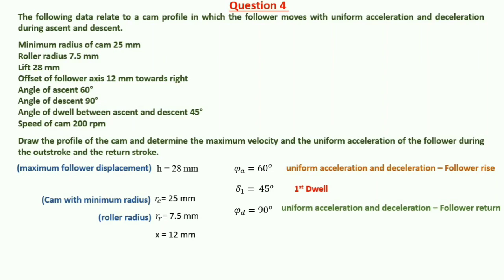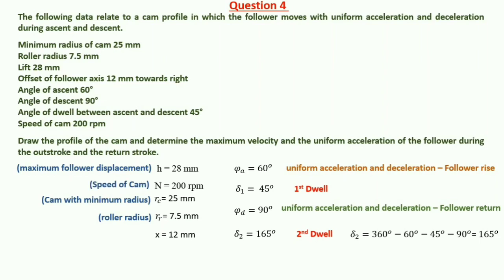Delta 1 is equal to 45 degrees and delta 2 is equal to 165 degrees. The speed of the cam is 200 rpm, so N is equal to 200 rpm. In this problem, we have to draw the profile of the cam and calculate maximum velocity and uniform acceleration for both rise and return.